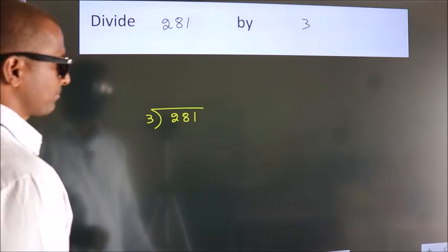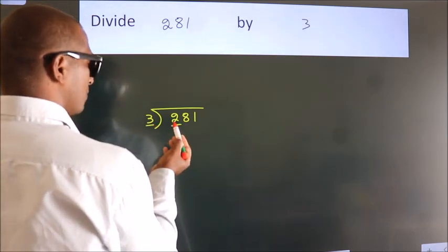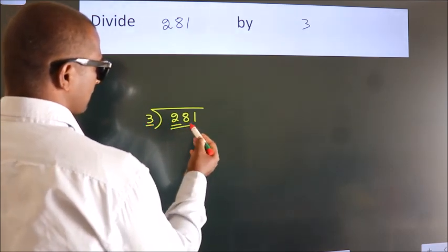Next. Here we have 2, here 3. 2 is smaller than 3, so we should take 2 numbers, 28.